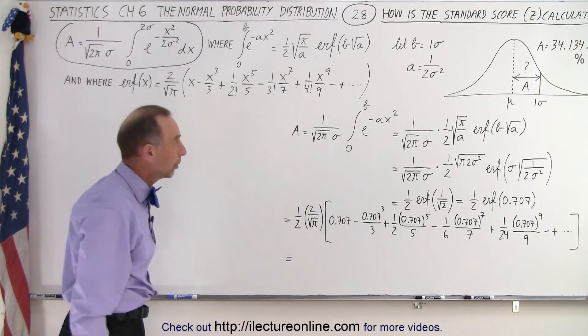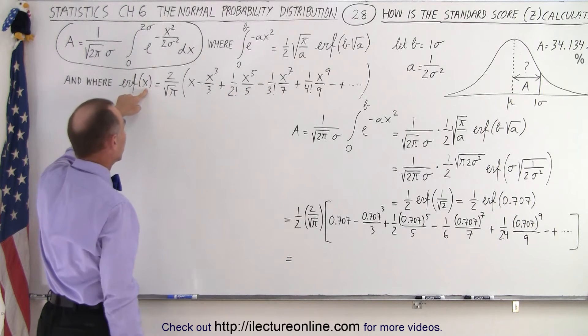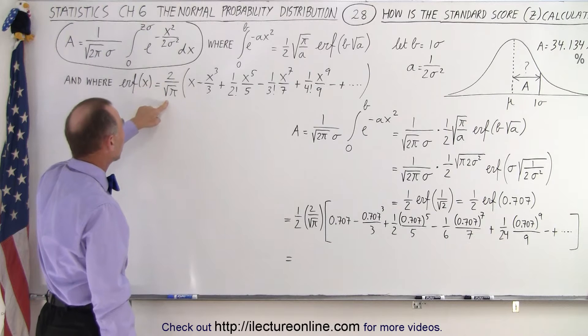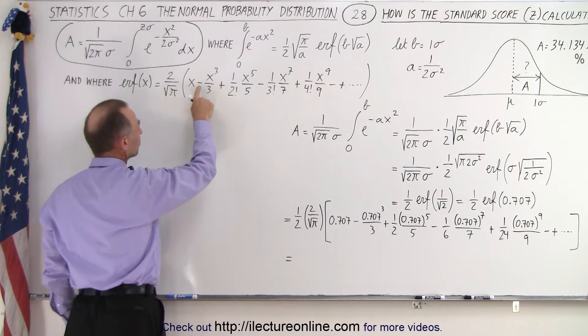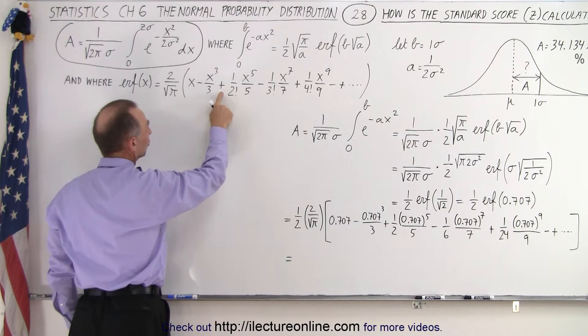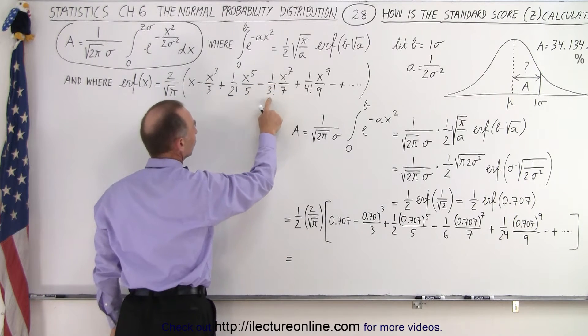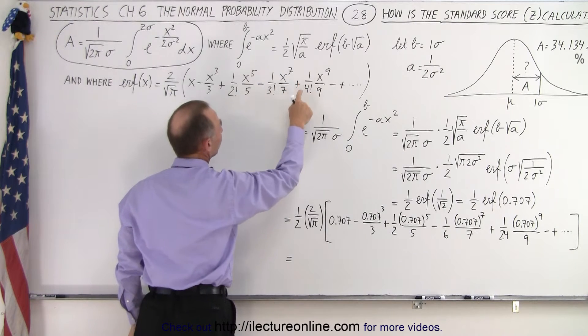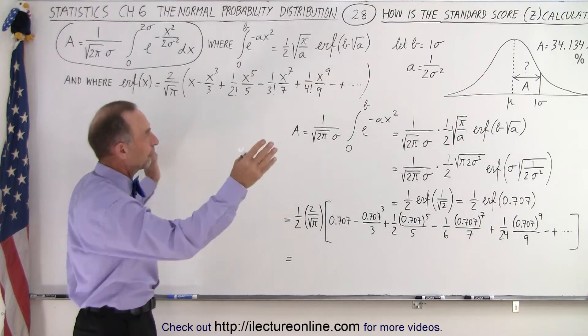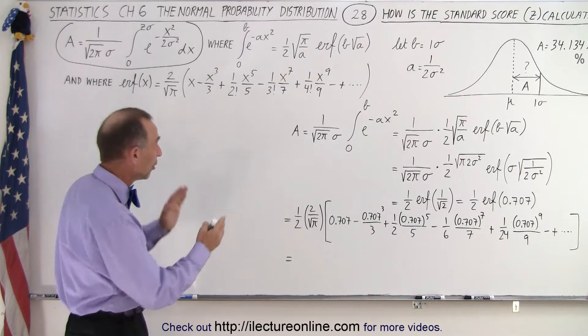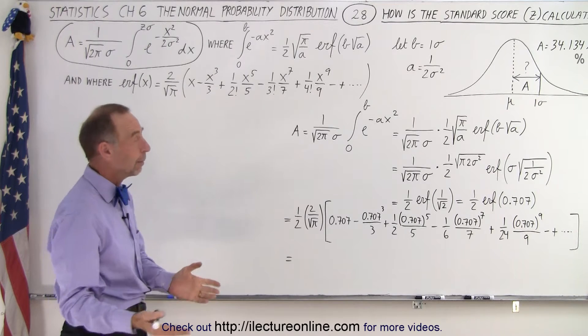Now what is the error function of some number? Well here, the error function of some number, let's call it x, x in this case is b times the square root of a, is equal to 2 over the square root of π times this infinite sum. The first term is x, the next term is minus x cubed over 3, the next term is plus 1 over 2 factorial times x to the fifth over 5, then minus 1 over 3 factorial x to the 7 over 7, plus 1 over 4 factorial x to the 9 over 9, and on and on like that to infinity, an infinite number of terms. Of course we don't have to do an infinite number of terms, we can do just a certain number of terms to get a close enough value.